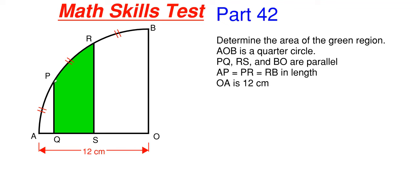We are also told and shown that the arc from AP to PR and to RB are all equal in length and our overall radius for the circle which is AO and BO is 12 centimeters.